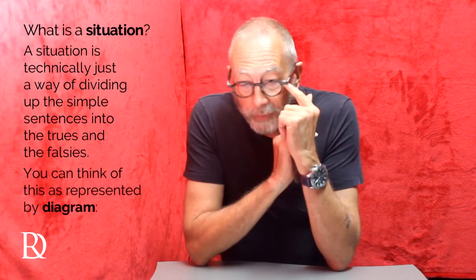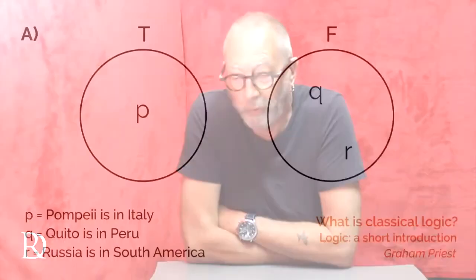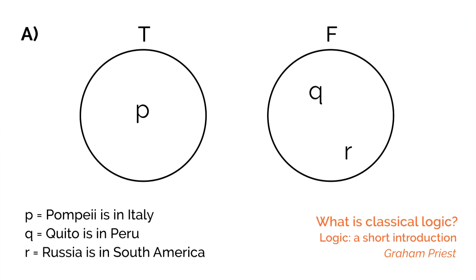So you can think of this as represented by a diagram. Here's a diagram which represents an interpretation — I've labeled it A so that you can refer back to it. You can see two circles labeled T and F. The sentences in the T circle are the ones that are true, and the sentences in the F circle are the ones that are false. Now, if you think of P, Q, and R as having the meanings I said just now, this is a situation which gets things right. P was Pompeii in Italy — that is indeed true. Q was Quito is in Peru — that's false, it's in Ecuador. And R was Russia in South America, which is of course false because it's in Europe. But that gives an illustration of one situation.